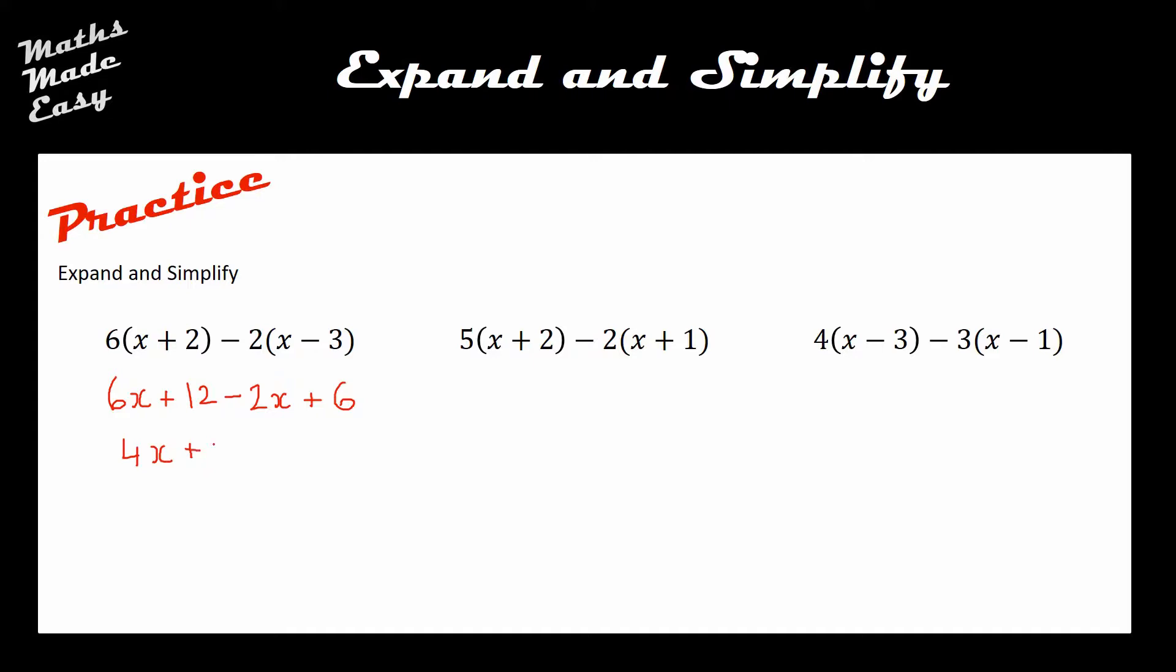In the second one, 5 times x is 5x, 5 times positive 2 is positive 10. Negative 2 times x is negative 2x, and negative 2 times a positive 1 is negative 2. My 5x minus 2x is going to give me positive 3x's left, and my plus 10 and my minus 2 is going to give me a positive 8 overall.